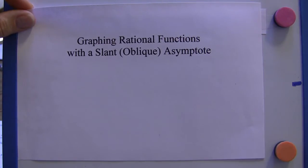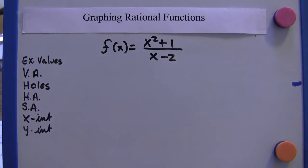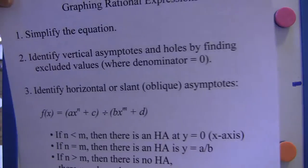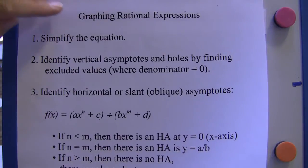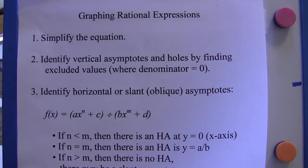Slant asymptotes are the same thing as oblique asymptotes. Before we look at this example here, I want to go over that there are four points to graphing rational expressions, or four things to pay attention to.